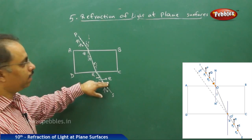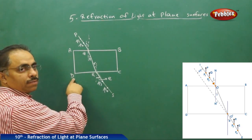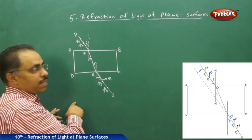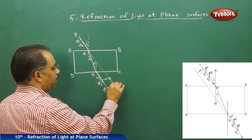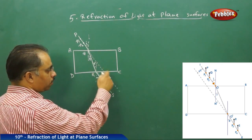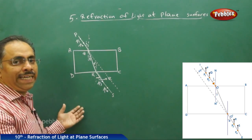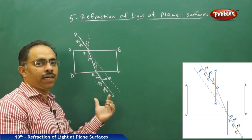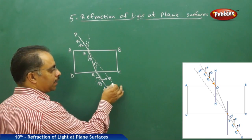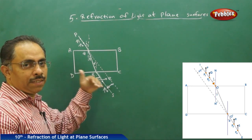The emergent ray RS makes an angle of emergence equal to the angle of incidence. This is because the glass slab ABCD has opposite surfaces parallel. Since these two surfaces are parallel, the corresponding angles are equal. If I extend the incident ray forward and compare it with the emergent ray, they are parallel — meaning there is ultimately no change in the direction of the light ray, but the ray is shifted a little bit towards the side.